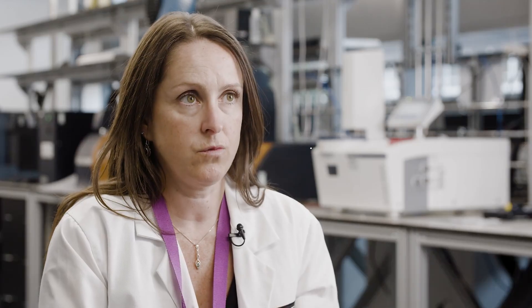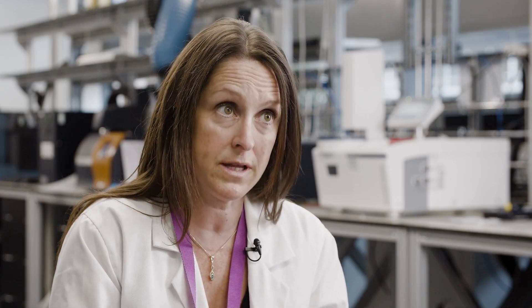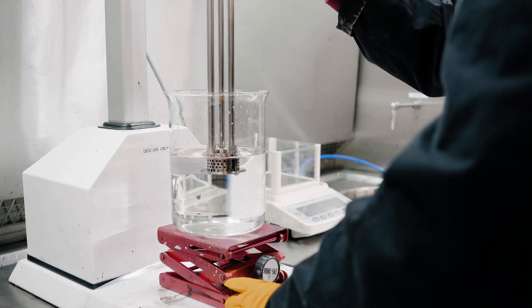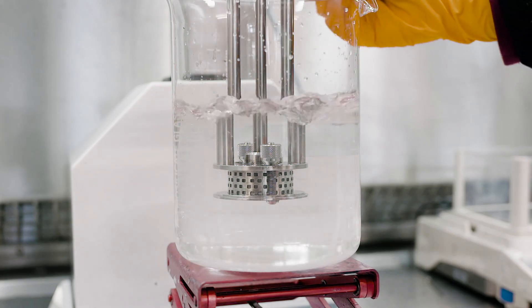One of the challenges of working with graphene is that it can be very tricky to formulate with and to disperse. In particular, it doesn't like being in water-based formulations, it has a tendency to agglomerate, and naturally wants to go back to its graphitic state and restack.